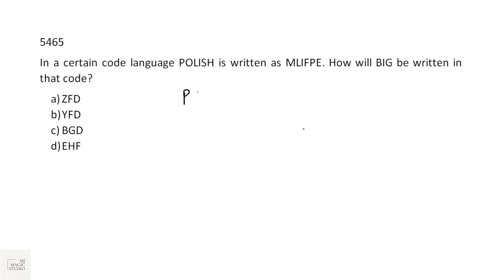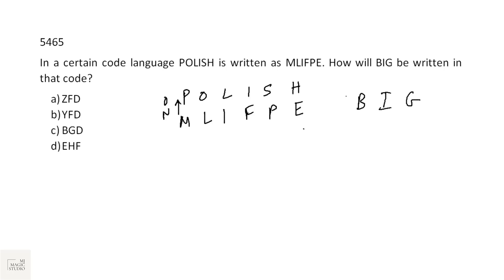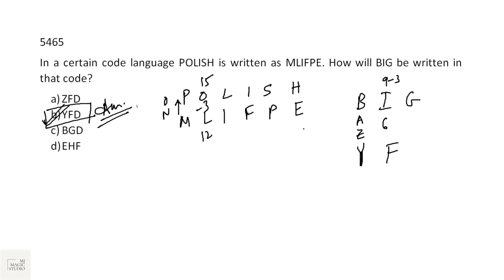In a certain code, POLISH (P-O-L-I-S-H) is written as MLIFPE. So P→M, N→O, P... going back: before B is A, then Z, here we should have Y. For O, the number is 15; L is 12 — this is again minus 3; so I is 9, 9 minus 3 is 6, and the 6th letter is F. So we are getting Y-F, and we have only one option Y-F-D. Option B is the pick.